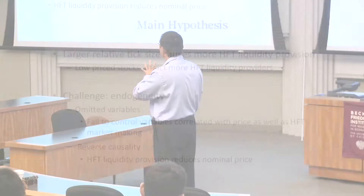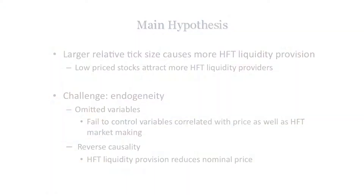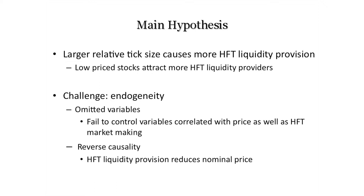Here is the main hypothesis of this paper: there is a non-informational channel called relative tick size. Larger relative tick size causes more HFT liquidity provision. High-frequency trading is concentrated in low-price stocks in terms of liquidity provision. But the challenge — as John Cochrane says — the biggest challenge for empirical work in finance is identification, identification, identification. Identification comes from two sources: omitted variables correlated with both relative tick size and HFT, or reverse causality.